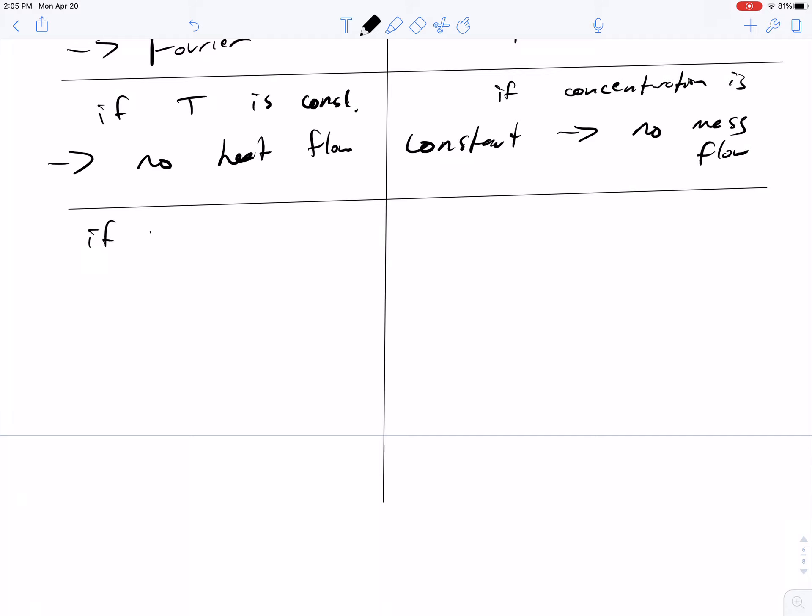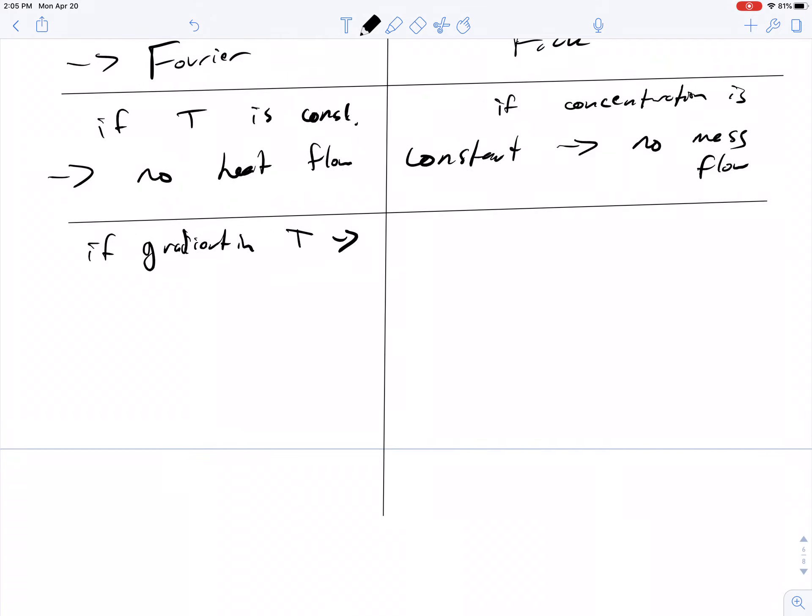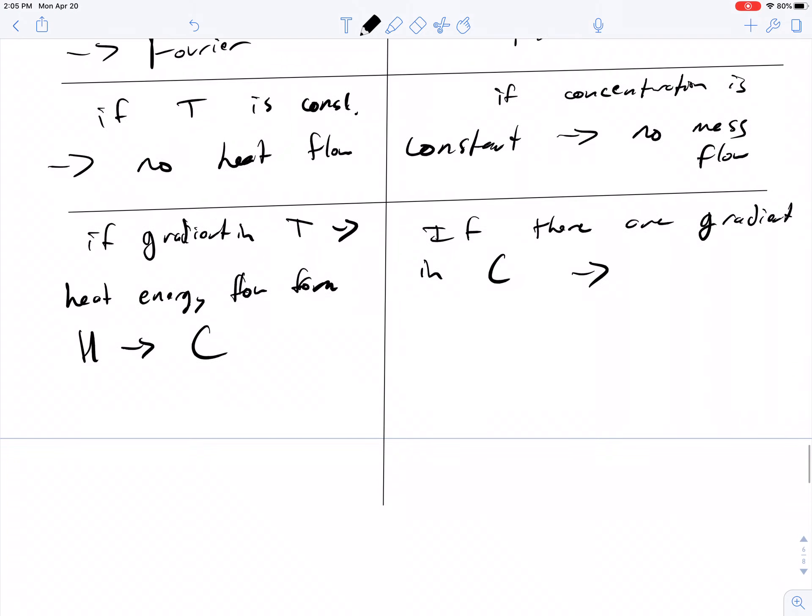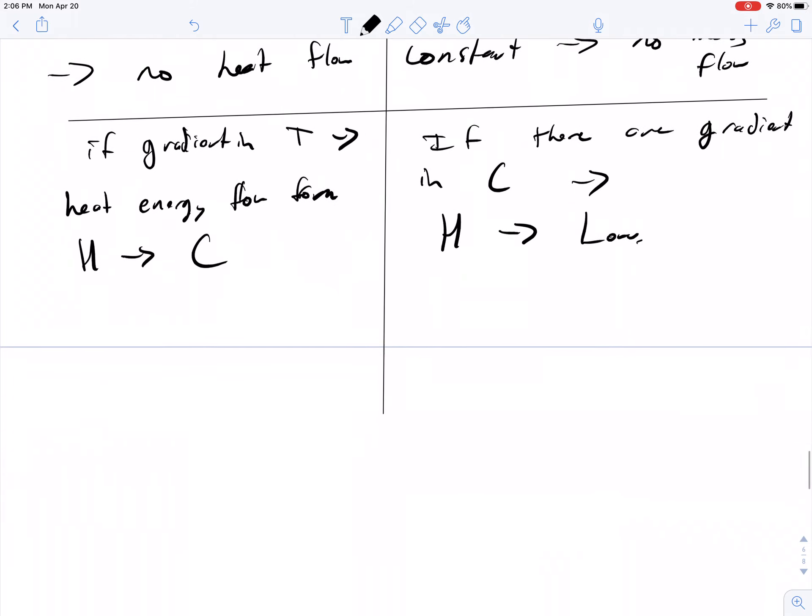If there's a gradient in T, you end up with heat energy flow from hot to cold. The same analogy holds: if there's a gradient in C, the concentration will flow from high to low, downhill.